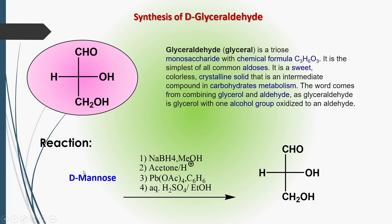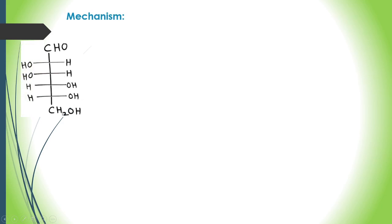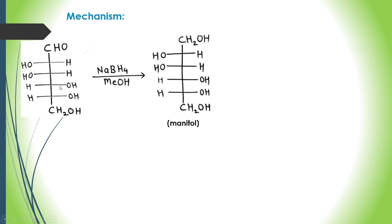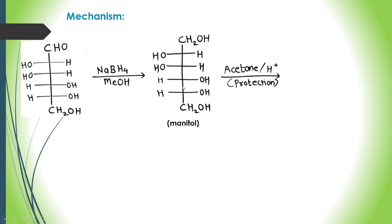D-mannose is the chiral precursor and D-glyceraldehyde is the target molecule. In the structure of D-mannose the OH is on the right-hand side. After reaction of D-mannose with NaBH4 in the presence of MeOH, the CHO is converted into CH2OH — a primary alcohol — because NaBH4 is a mild reducing reagent that converts the aldehyde to a primary alcohol. The product from D-mannose is therefore called mannitol.